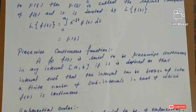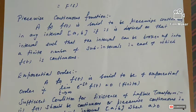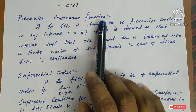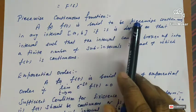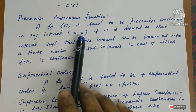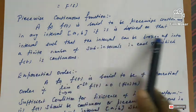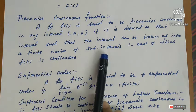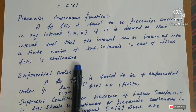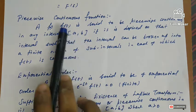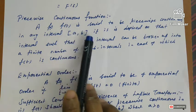Next important definition: piecewise continuous function. A function f of t is said to be piecewise continuous in any closed interval [a, b] if it is defined on that interval such that the interval can be broken up into a finite number of sub-intervals, in each of which f of t is continuous. The closed interval [a, b] is split up into sub-intervals.